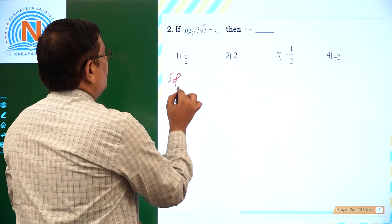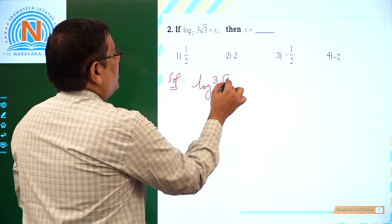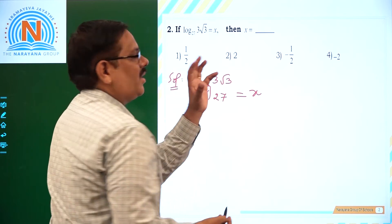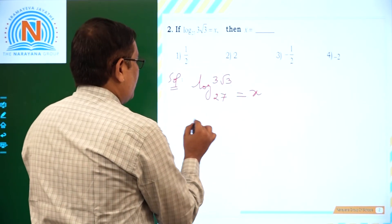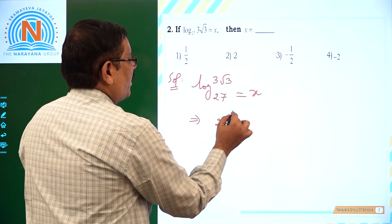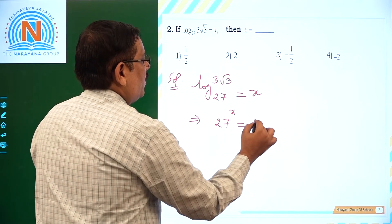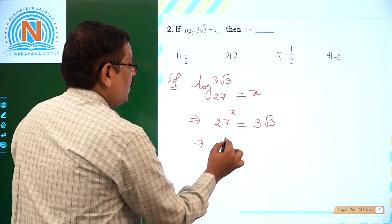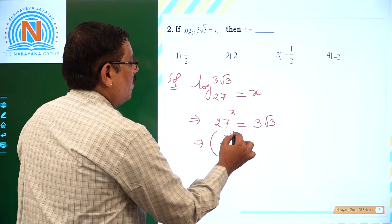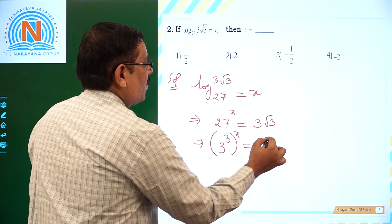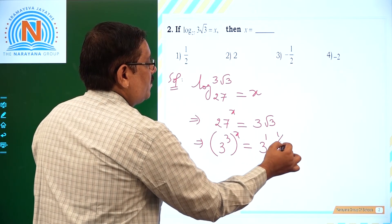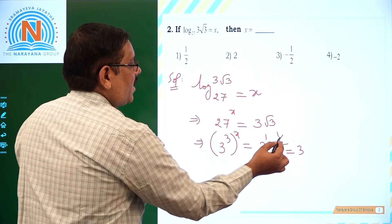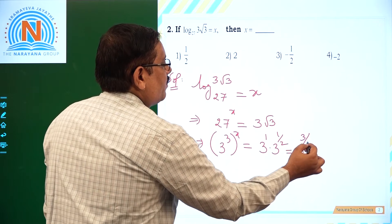Next question: if log 3√3 to the base 27 is equal to x, then what is the value of x? It implies 27 to the power x equals 3√3. Now, 27 can be written as 3 cubed, so 3 cubed to the power x. And 3√3 is 3 to the power 1 multiplied by 3 to the power 1/2. As the bases are equal, you add up the powers: 1 plus 1/2, giving 3 to the power 3/2.